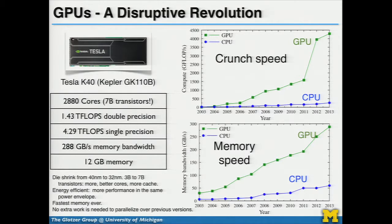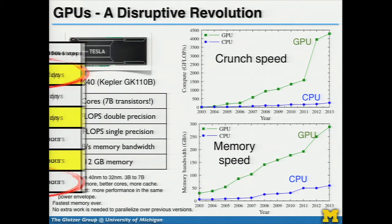The Tesla K40 has 2,880 cores and 7 billion transistors on a single chip. I can do one and a half teraflops of double precision or over four teraflops single precision — which is good enough for many different problems — in something you could buy a smaller version of at Radio Shack for a few hundred dollars. That's a supercomputer in the palm of your hand. What that means: a computation that took 140 days for the previous generation of graduate students now takes 27 hours, by rewriting our code specifically for GPUs.